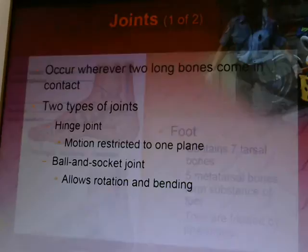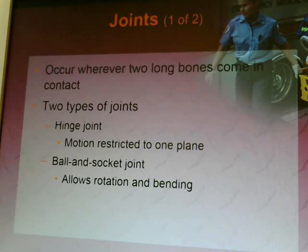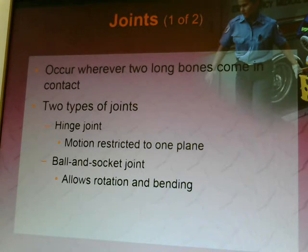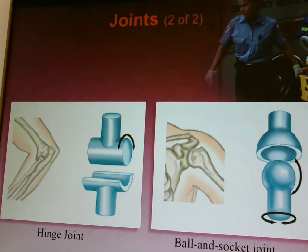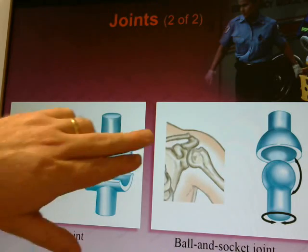Joints occur wherever two long bones come together. There are two types: the hinge joint, which restricts motion to one plane — like the knee and elbow — and the ball-and-socket joint, which allows rotation and bending — like the shoulder and hip.